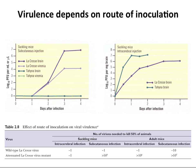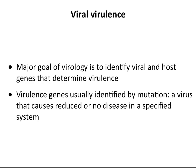Another bunyavirus example uses Lacrosse from Wisconsin, comparing suckling and adult mice via intracerebral or subcutaneous routes, measuring the LD50 — the amount of virus needed to kill half the animals. One PFU is enough to kill half of suckling mice by either route. For an attenuated vaccine strain, subcutaneous injection never reaches an endpoint — it doesn't kill half the mice no matter how much virus you put in. But if you inject this vaccine strain directly into the brain, it kills just like wild-type virus.